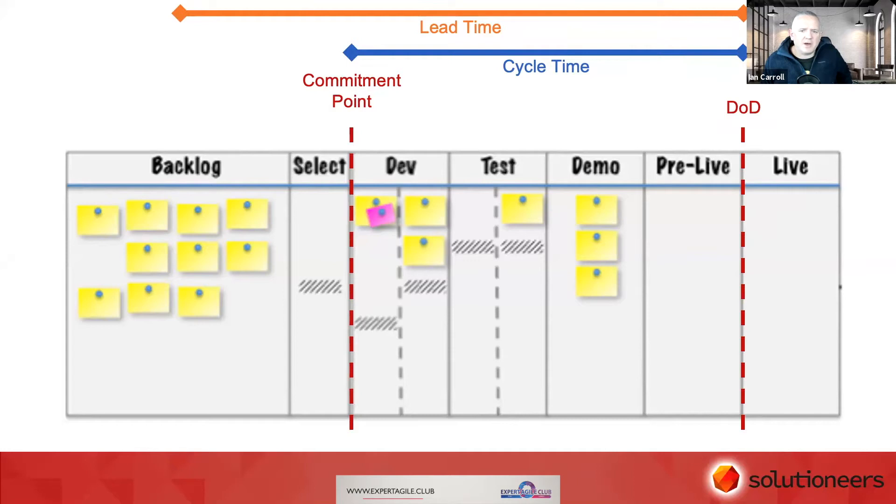This is a typical, very common software development board. Something goes past the commitment point—in other words, we've started the work. We're actively working on the work that moves across the board through whatever steps, whatever process you're using to develop software. At some point it hits our definition of done, and at that point we stop the clock on it. When we measure each work item that goes across the board from the commitment point to the definition of done, we can get this metric called cycle time.